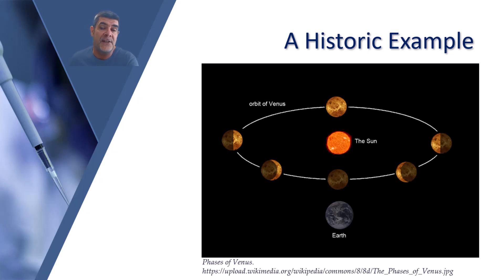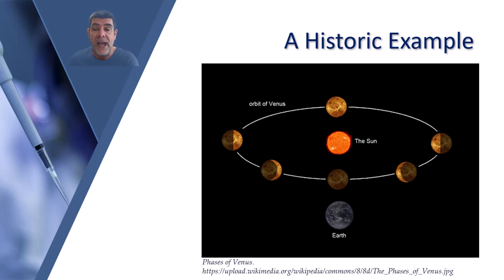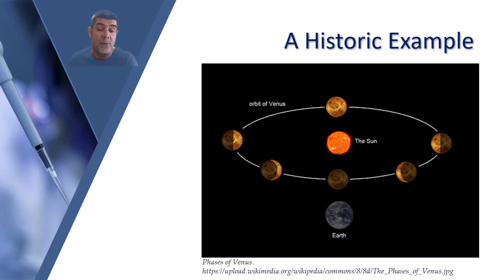Galileo explained that the phases of Venus were caused by its orbit of the sun, much the same way as the phases of our moon. Geocentric models cannot explain this observation — you cannot have phases of Venus if Venus is orbiting the Earth and the sun is also orbiting the Earth. Galileo concluded that Venus and all other planets must orbit the sun, surmising that Copernicus's heliocentric model is the correct model.